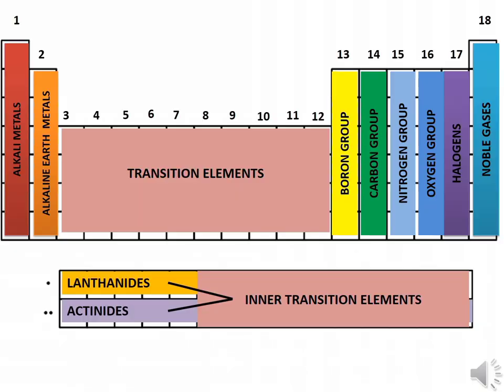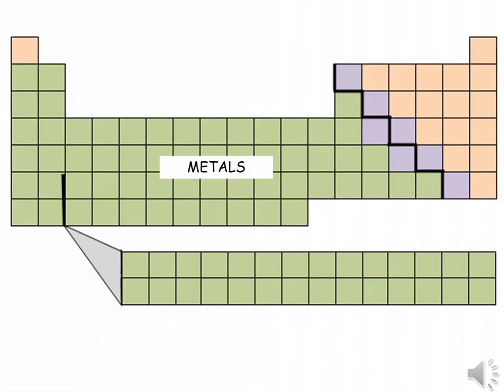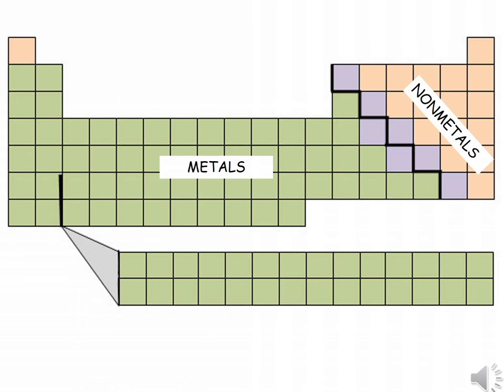Elements from the taller columns, Groups 1, 2, and 13 through 18, are called the representative elements or main groups of the periodic table. For example, we can use the periodic table to identify the known elements as metals, nonmetals, and metalloids.